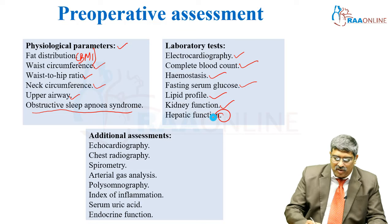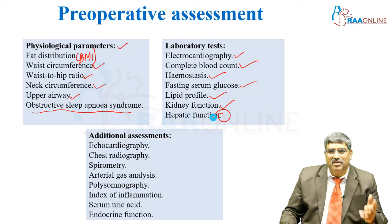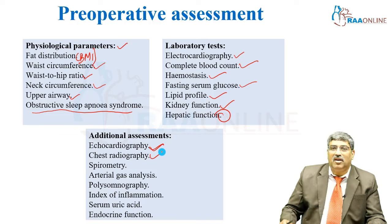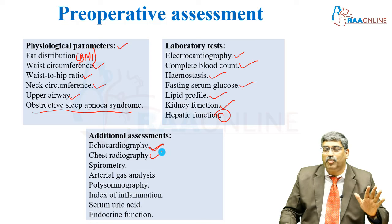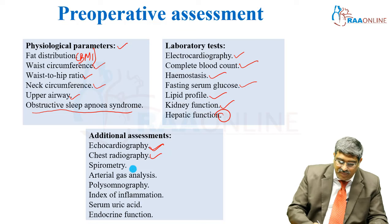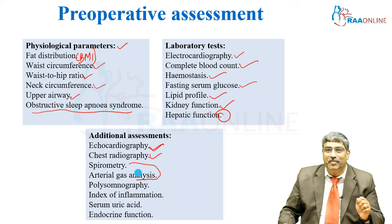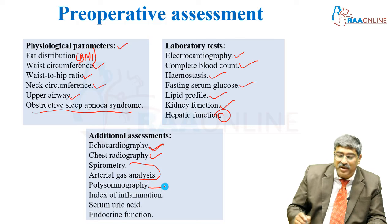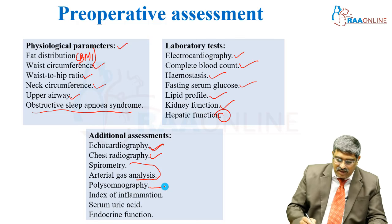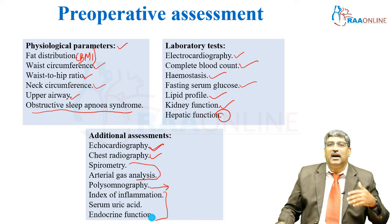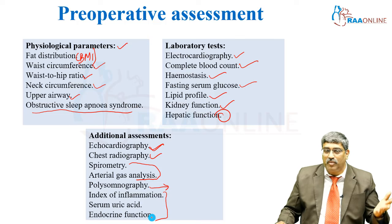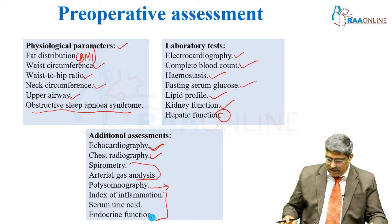Additional tests include echocardiogram for cardiac assessment, CT scan or chest radiograph of the thoracic cavity — because the respiratory system is the most important effector system affected by obesity — spirometry and ABG to assess lung mechanics. Sleep study should be done in class 3 obesity, along with index of inflammation, serum uric acid, endocrine function, and thyroid profile.